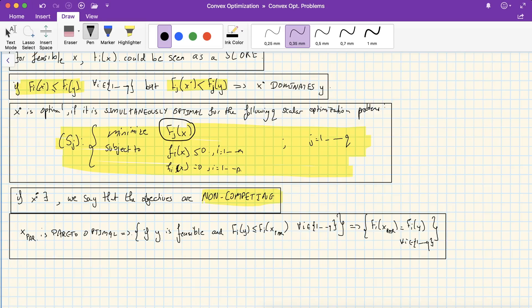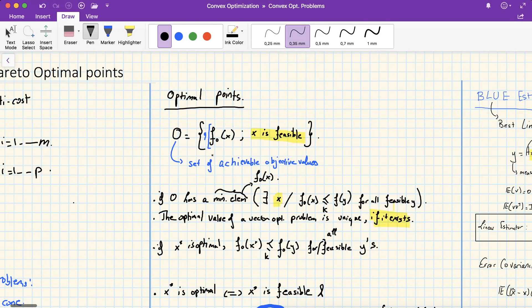And we also gave a nice interpretation for vector optimization problems. In general, we say that a point is optimal when F zero of x star is the minimum element of the set O, that is the set of achievable objective values. However, if it is the minimal element, then we say that x star is Pareto optimal.